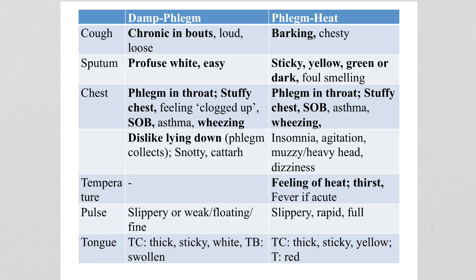With phlegm heat, the cough is barking and chesty. The phlegm is sticky, yellow, green, or dark, and it can be foul-smelling. There can be phlegm in the throat, a stuffy chest, shortness of breath, asthma, and wheezing — as with damp phlegm.